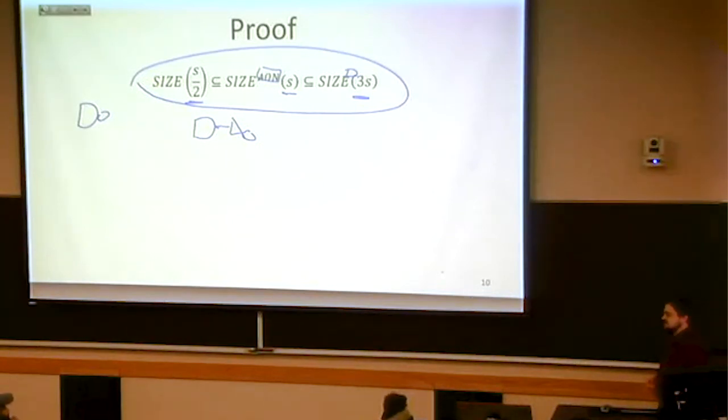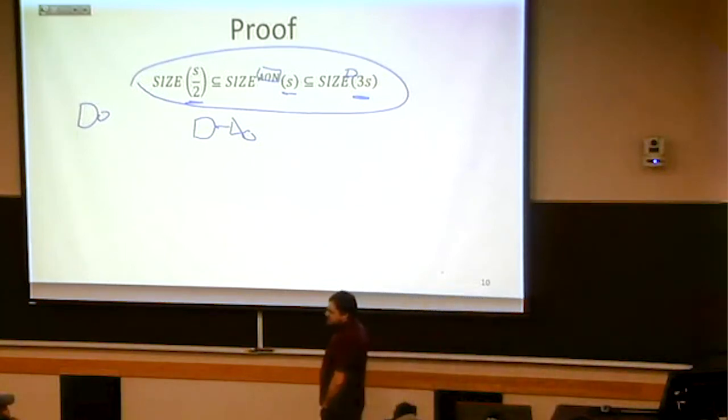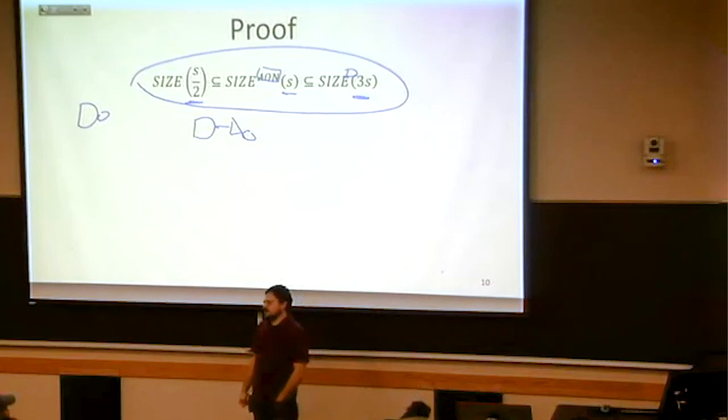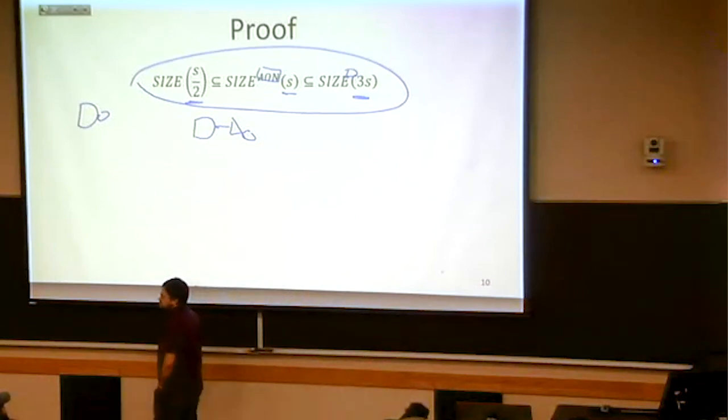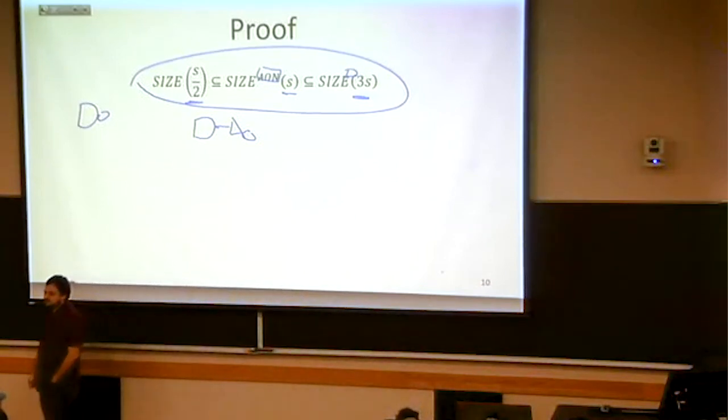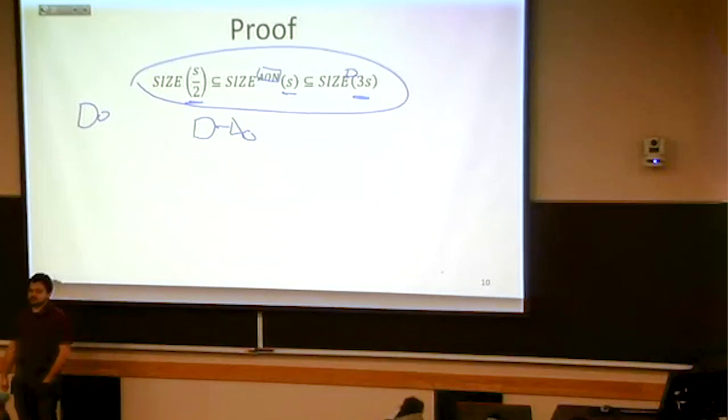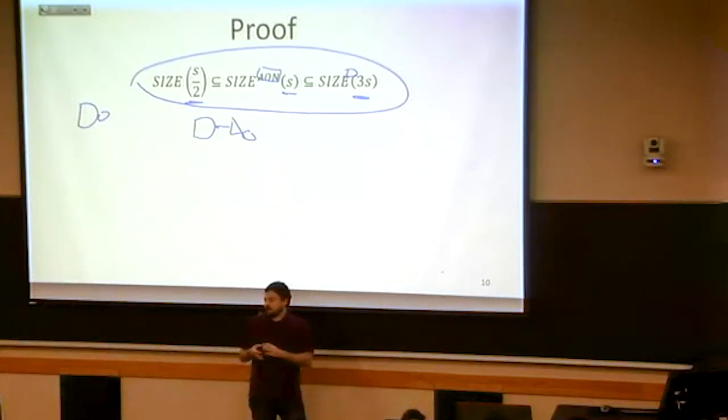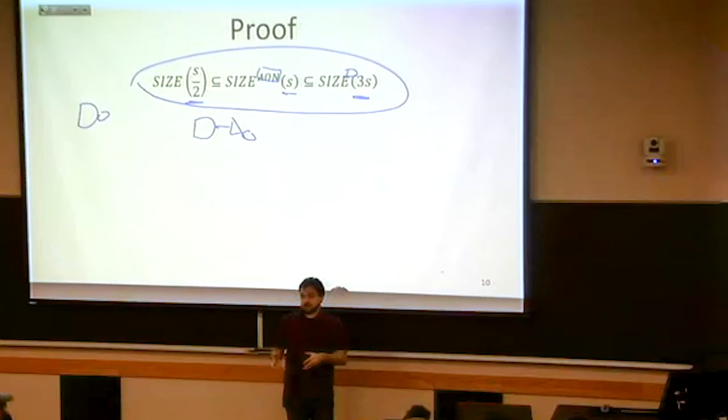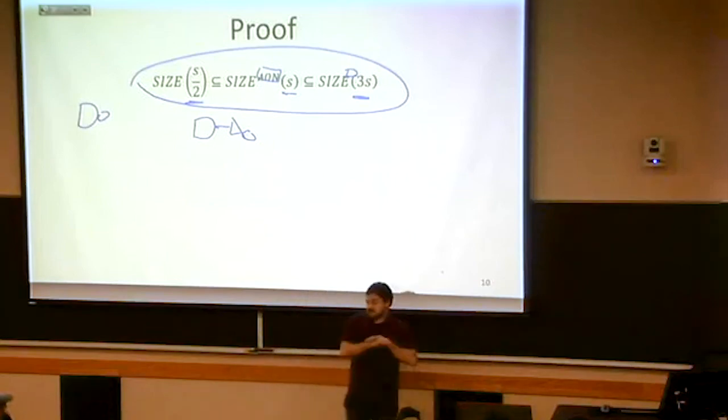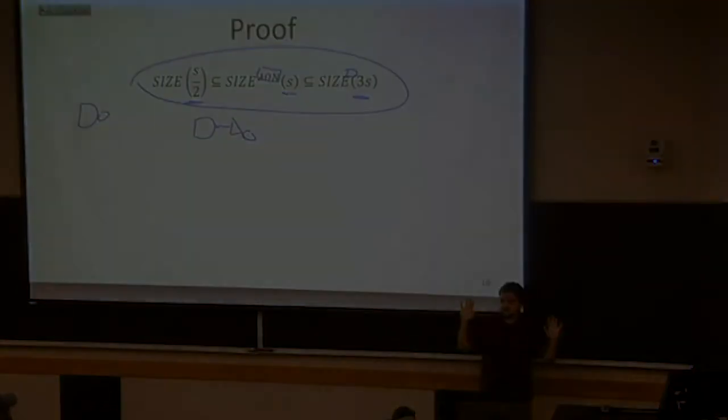That way we could say something like, if this function requires N squared AND or NOT gates, if I'm ignoring the constants, then also it requires N squared NAND gates, because those were at most a constant different from one another. That means that if we're ignoring constants, we can just say this function requires N squared gates and not even have to worry about what kinds of gates they are.